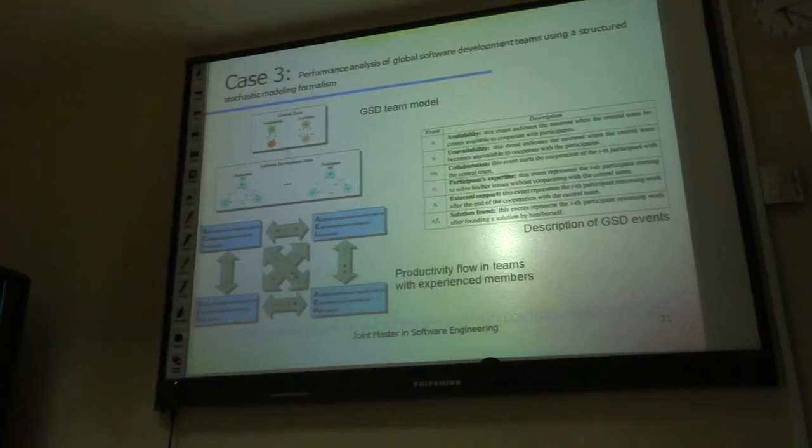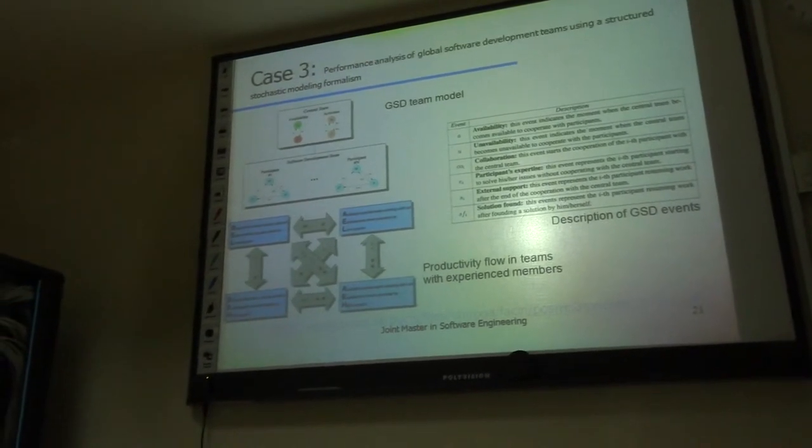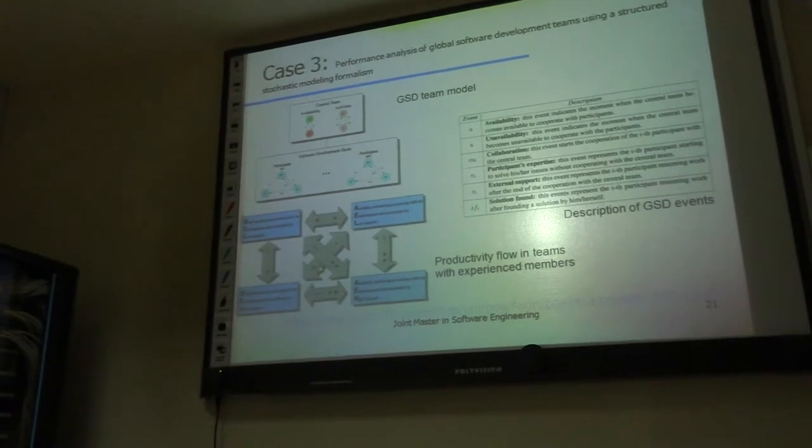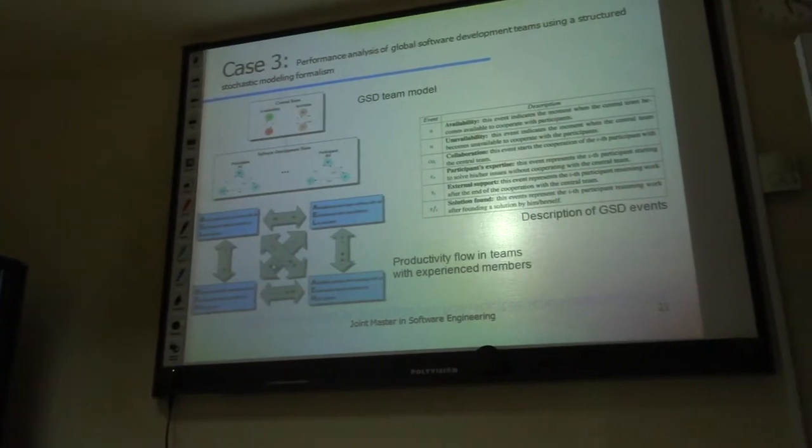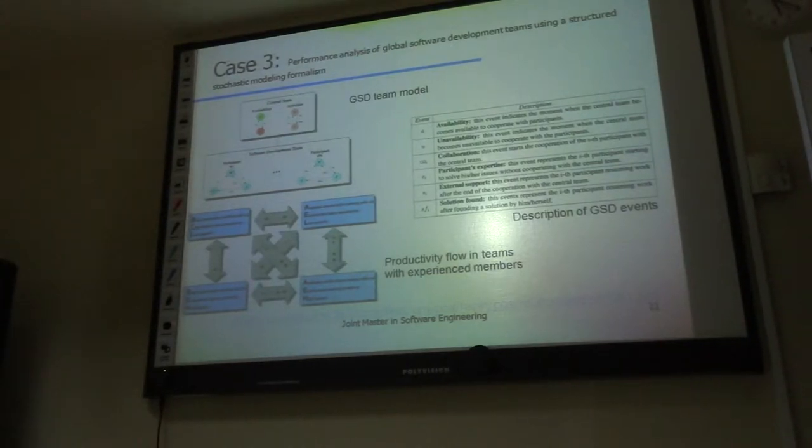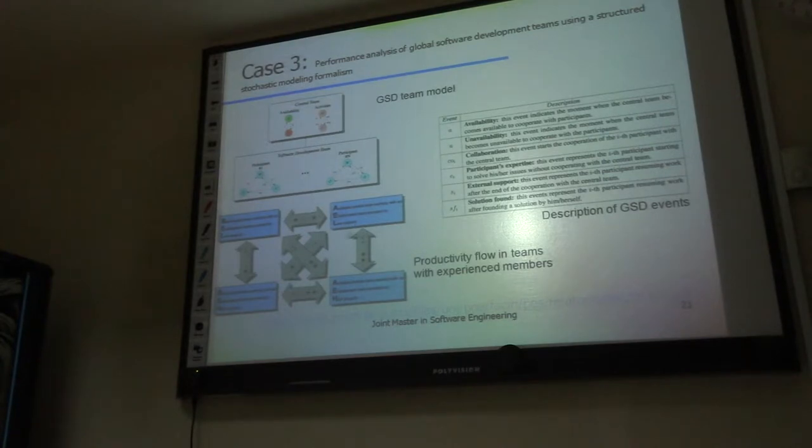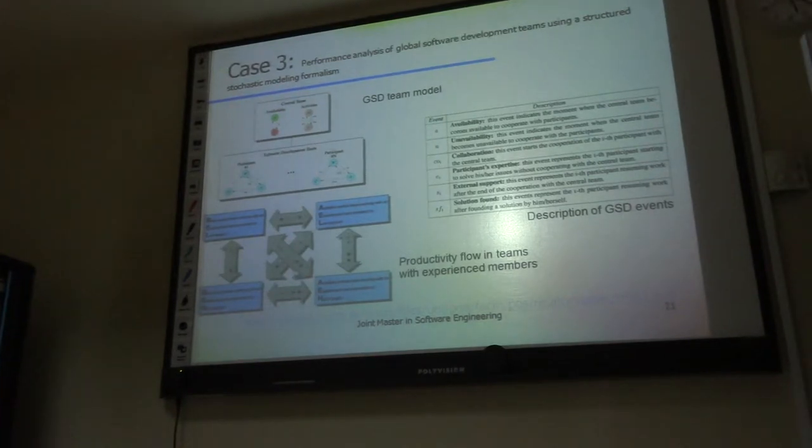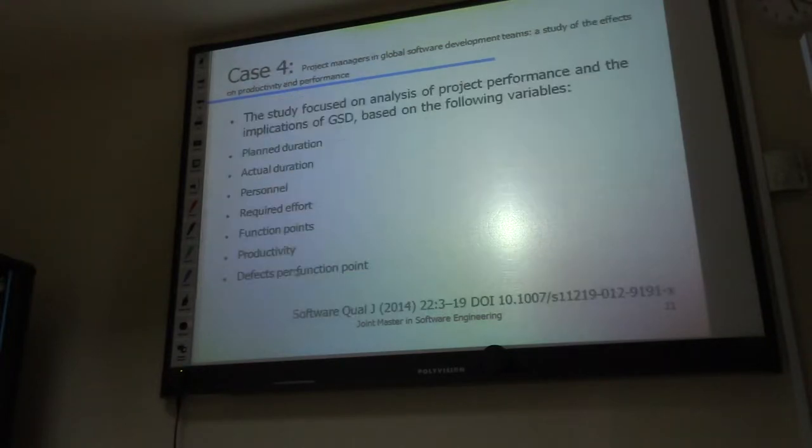What this paper is discussing about is that there is a productivity flow between teams of experienced and less experienced members. If you can see here, for example, we can have a busy central team working with an experienced team provided by low support. This is a very important model because it shows to you how virtual teams can be managed and what's the best way of managing the virtual team.